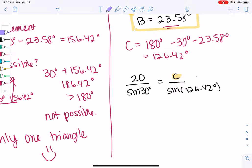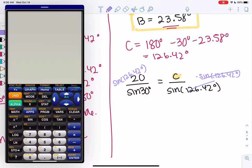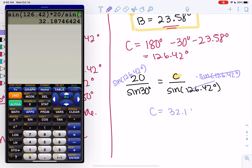So we'll go ahead and multiply by sine of 126.42. And just multiply on the calculator. Sine of 126.42 times 20 all over sine of 30. And I get C is equal to 32.19. And I think now we have solved all three sides.